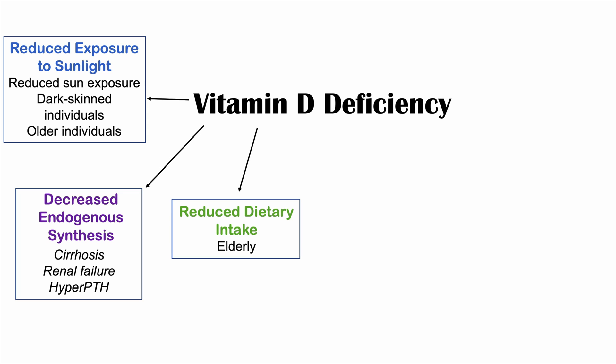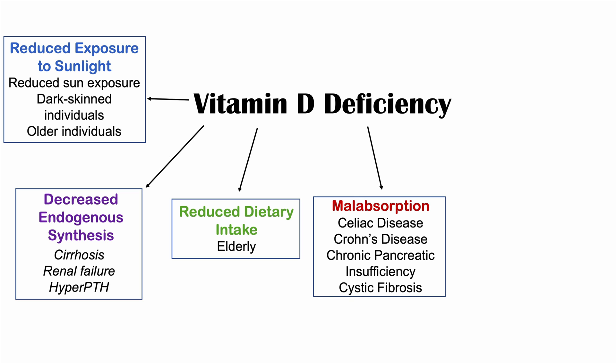Another category is reduced dietary intake, which is seen mostly in the elderly population. Another category is malabsorption — patients with malabsorptive conditions like celiac disease, Crohn's disease, chronic pancreatic insufficiency, and cystic fibrosis can have issues absorbing vitamin D.